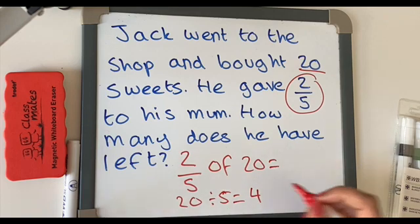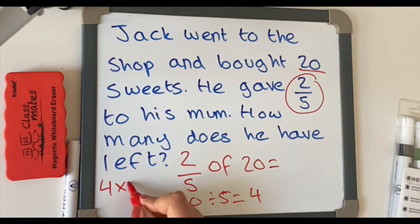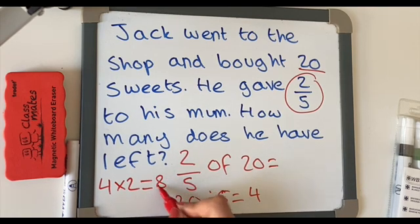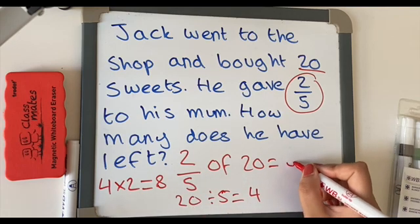And then we do 4, there's not much space here, so I'll do over here. We'll do 4 times that by our numerator, which is 2. And the answer is 8. 4 times 2 equals 8. So two-fifths of 20 is 8.